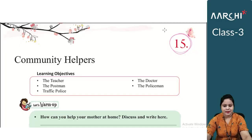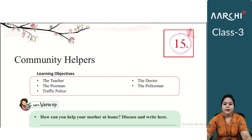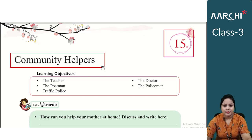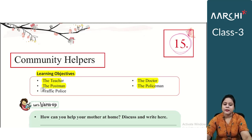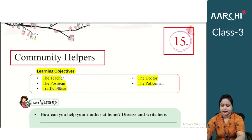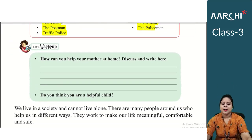So students, this is our today's chapter — Chapter Number 15 — and the name of the chapter is Community Helpers. In this chapter, we will read about those people who help our community. In the learning objectives, today we will cover topics including: the teacher, the doctor, the postman, the policeman, and traffic police. All these topics will be covered in this chapter.